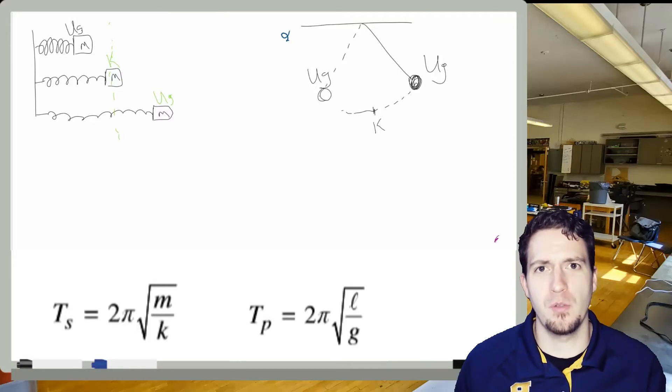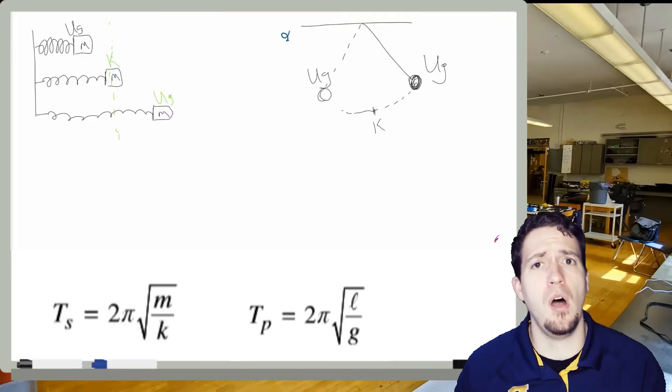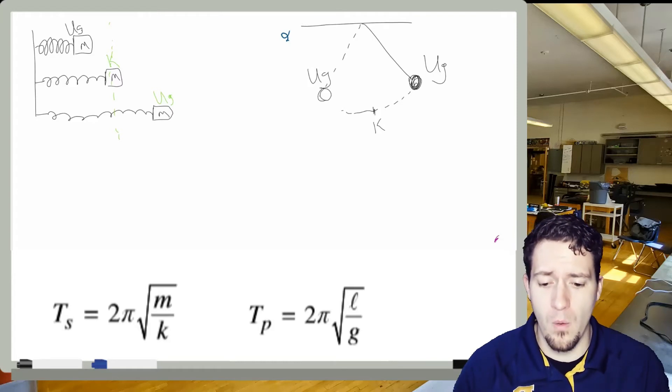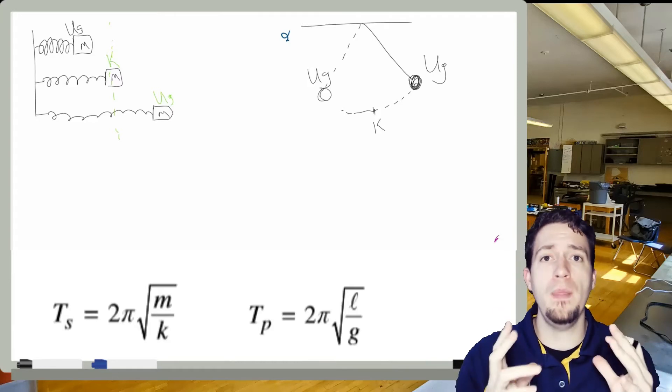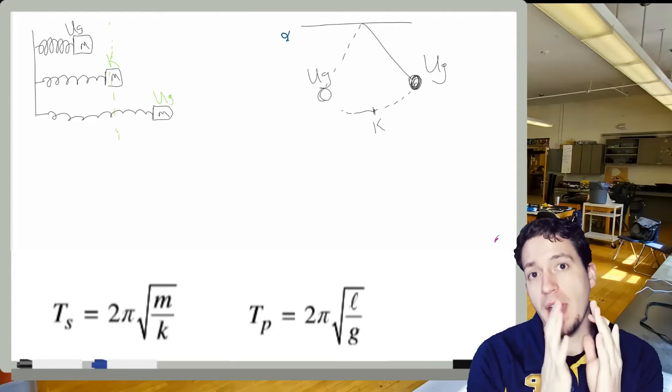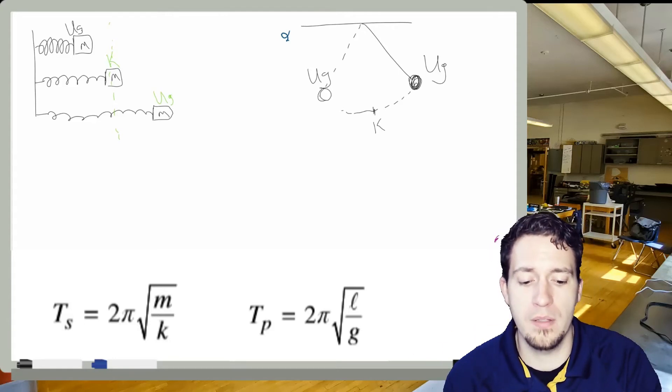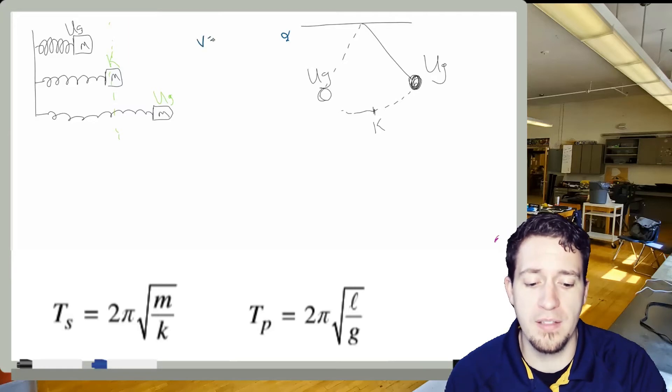So if you think about these scenarios, we can also then, if we're talking about energy, also talk about speed and acceleration as well. Now, in terms of motion, when the spring is fully squished and fully stretched at those two endpoints, we should actually see the velocity at those two spots be zero.